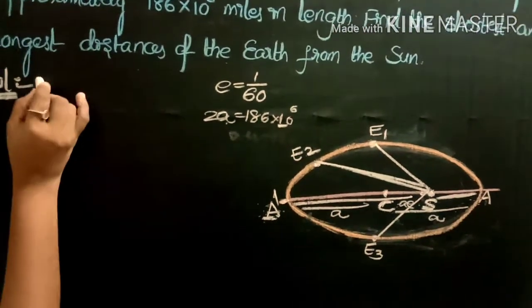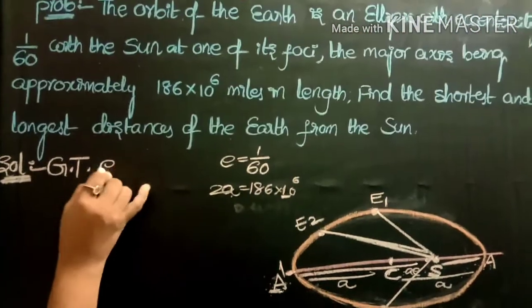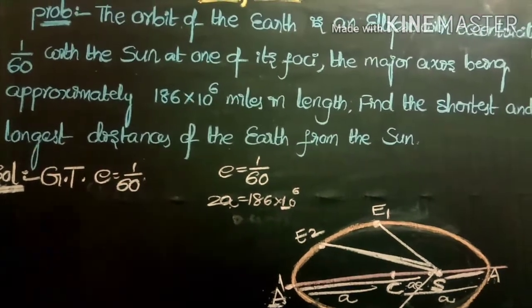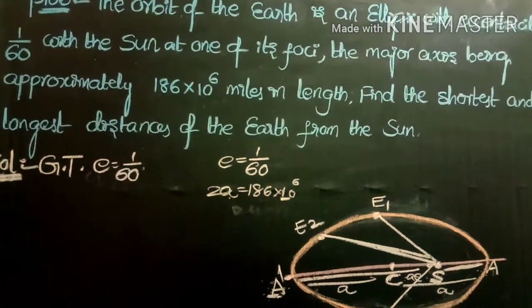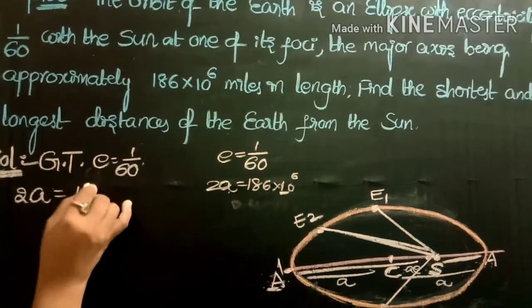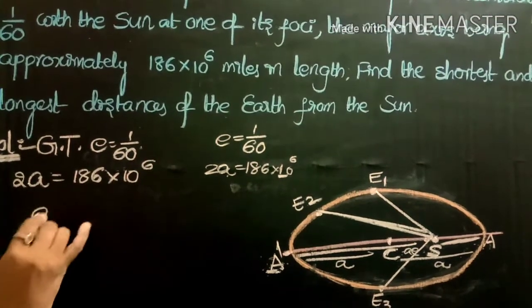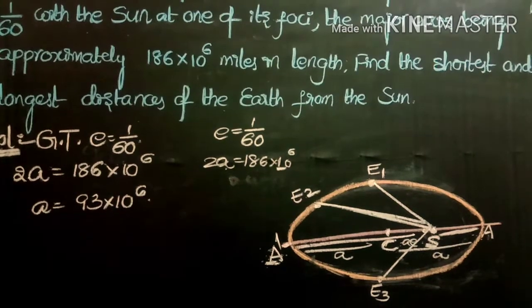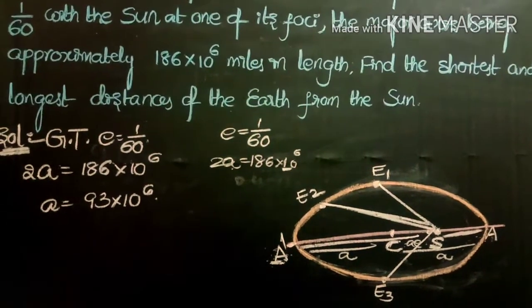Given data: eccentricity e = 1/60, and length of major axis 2a = 186×10⁶. Therefore a = 93×10⁶.